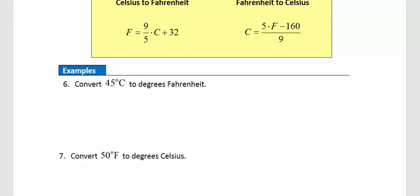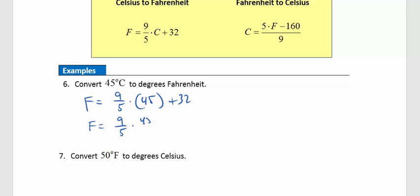Example 6: Convert 45 degrees Celsius to Fahrenheit. Using the formula F = (9/5)C + 32, plug in 45 for C. Think of 45 as a fraction: (9/5) × (45/1) + 32. There's a common factor of 5, so we divide: 9 × 9 + 32. Nine times 9 is 81, and 81 plus 32 is 113 degrees Fahrenheit.